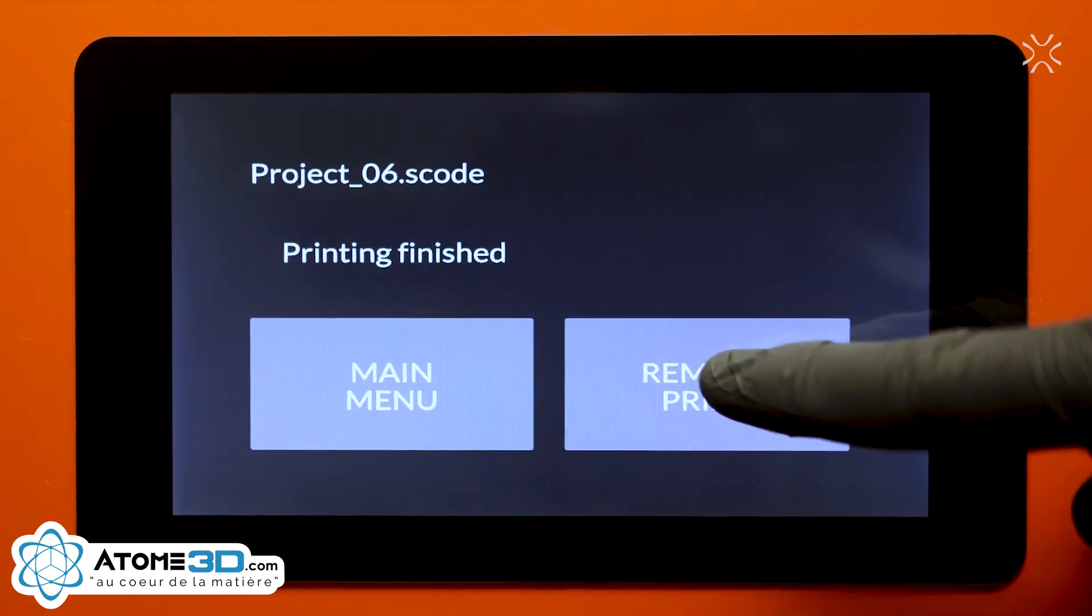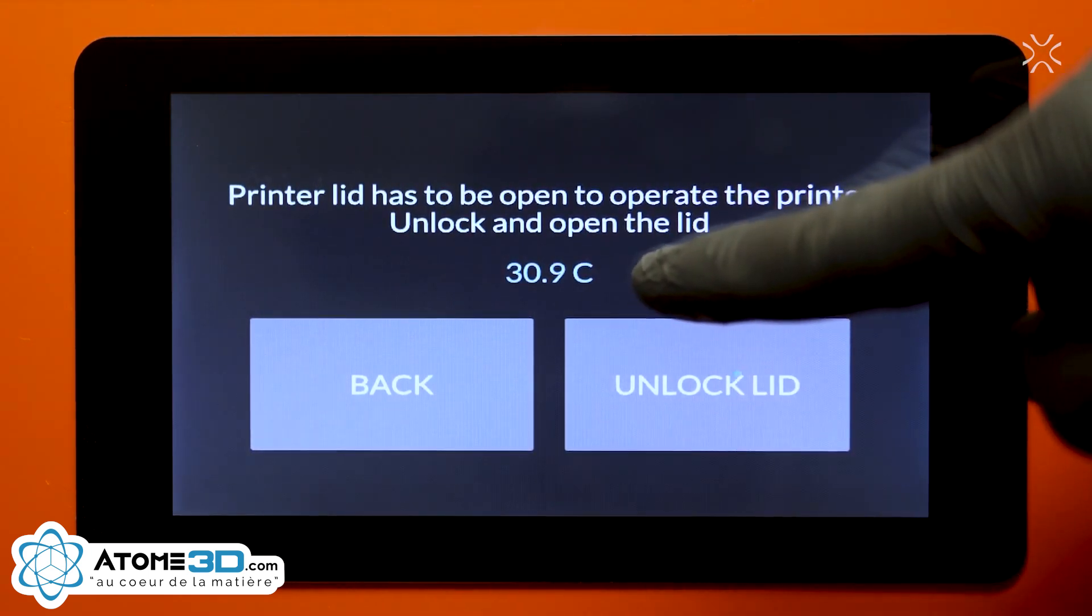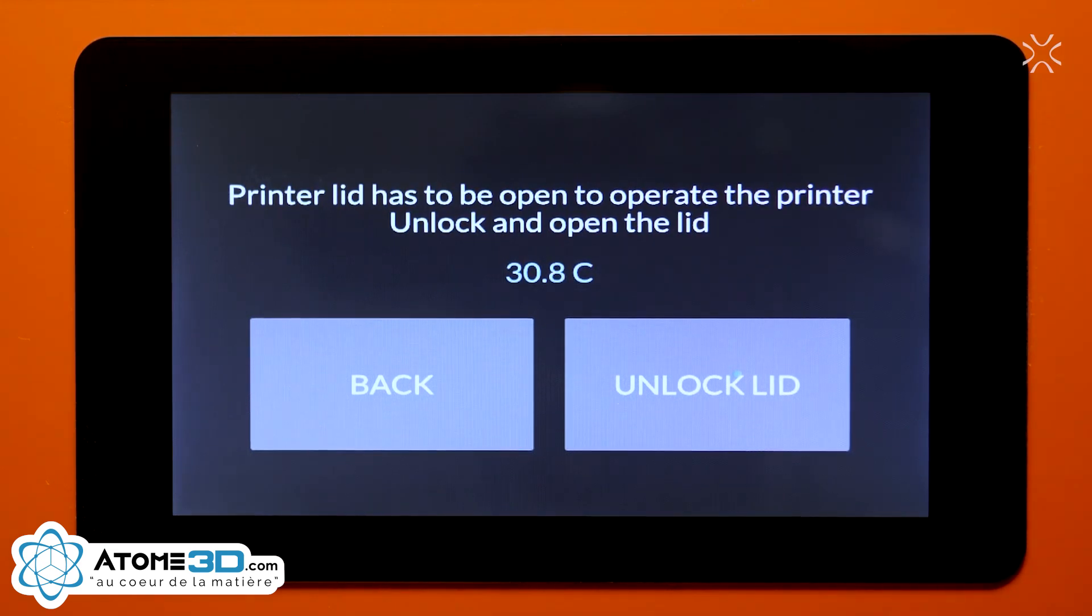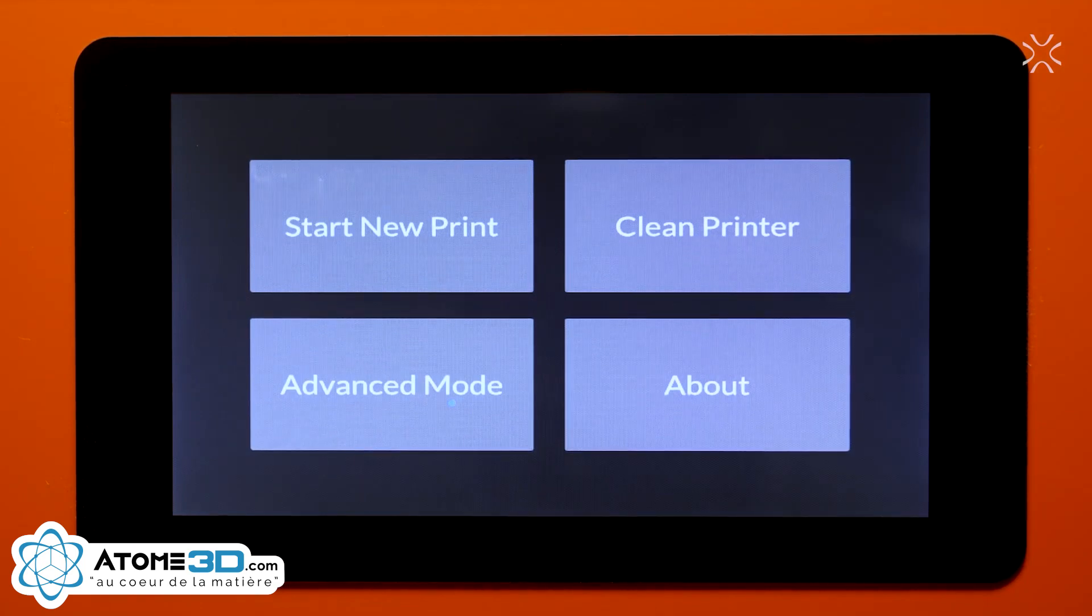Click Remove Printout. Now the temperature inside the printing chamber will be displayed on the screen. You need to wait until the temperature falls below 50 degrees Celsius to safely open the lid without damaging the print.